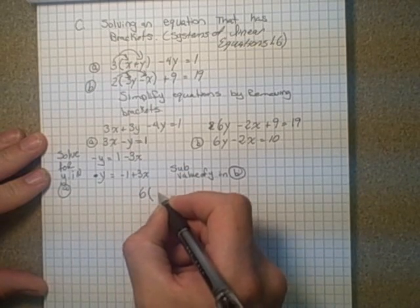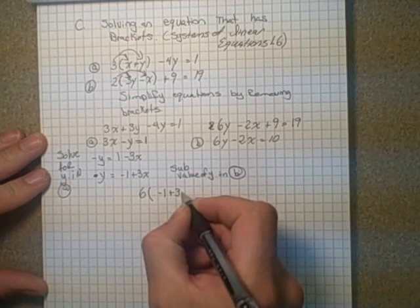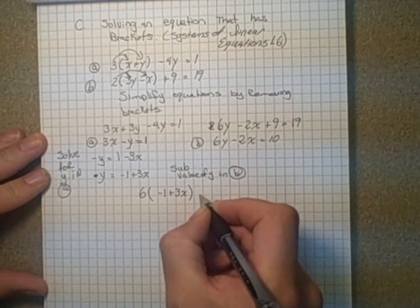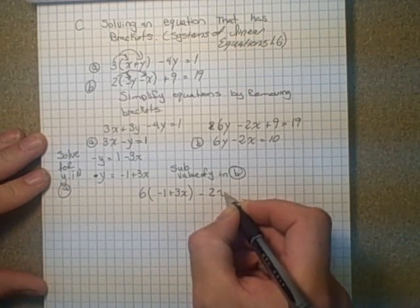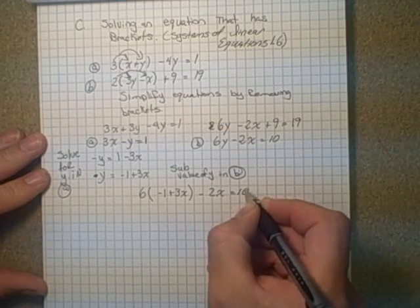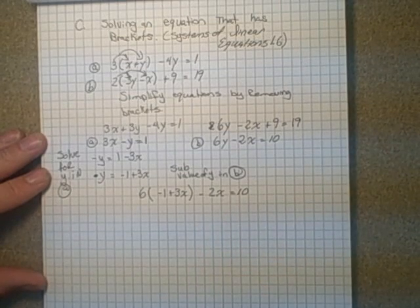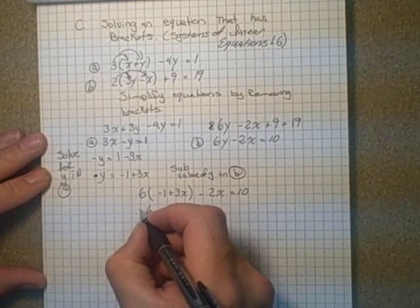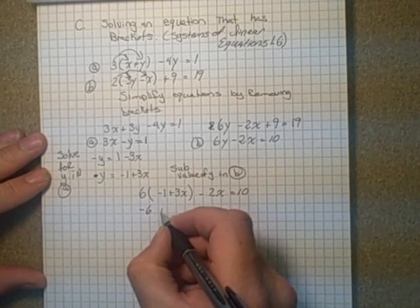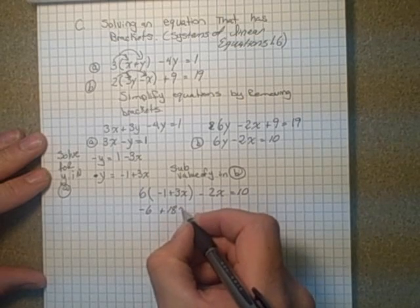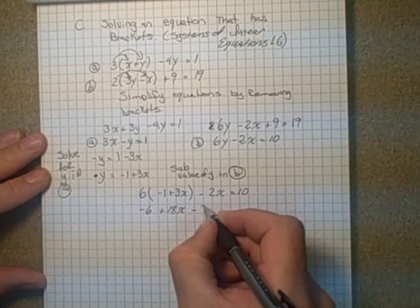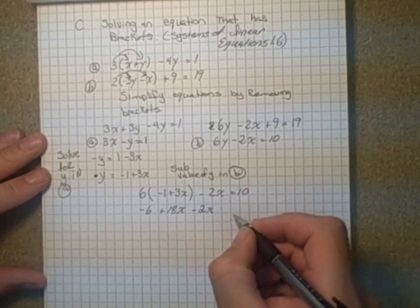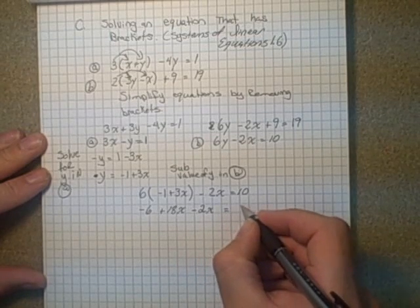6 times negative 1 plus 3x is my y. Subtracts 2x is equal to 10. Reduce negative 6 plus 18x minus 2x is equal to 10.